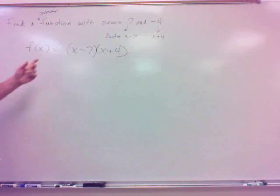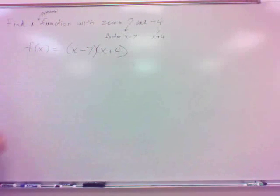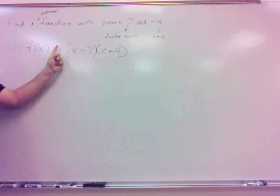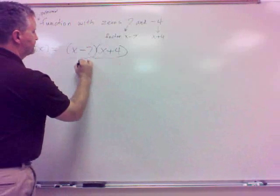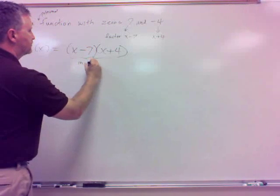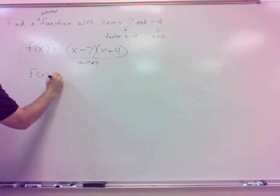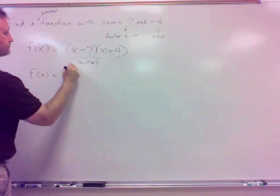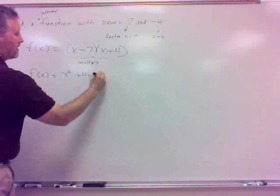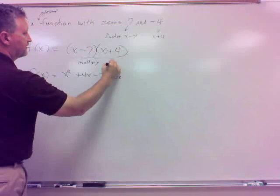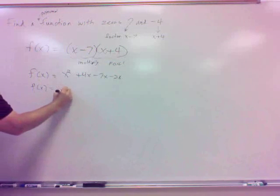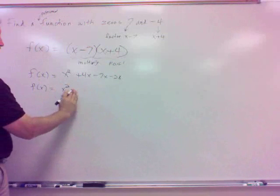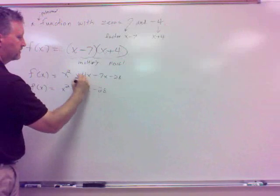There are other options — you could multiply any constant in front — but typically we multiply this out by FOILing. So we get f of x equals x squared plus 4x minus 7x minus 28, which combines to f of x equals x squared minus 3x minus 28.